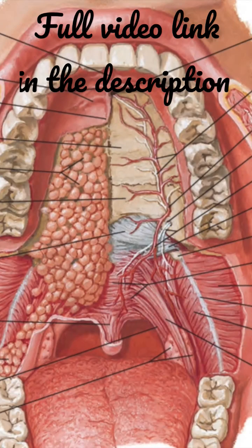Next we will see about the palatine aponeurosis. It is the fibrous framework of the soft palate where all the palatine muscles are attached.